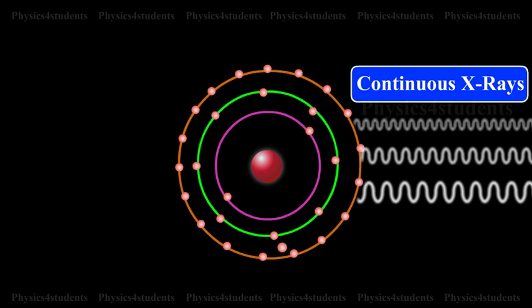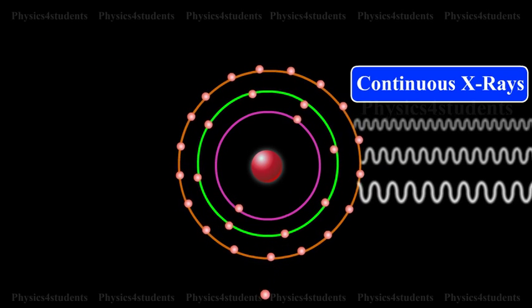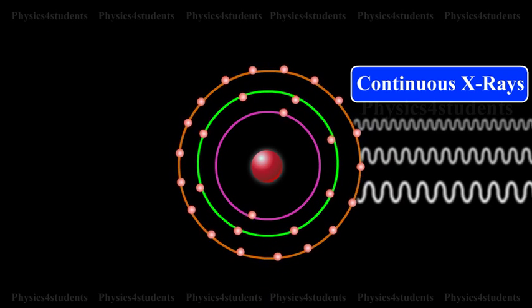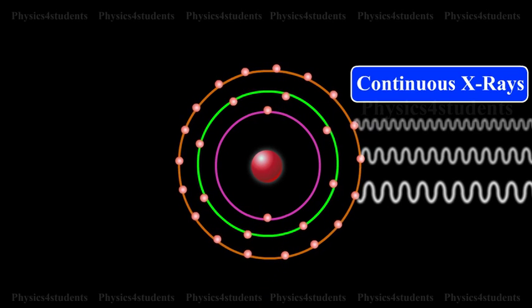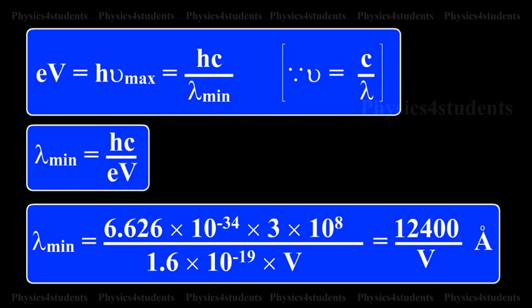The minimum wavelength depends on the anode voltage. If V is the potential difference between the anode and the cathode, eV is equal to h nu maximum, that is equal to hc by lambda minimum. Since nu is equal to c by lambda, the minimum wavelength of the given radiation is lambda minimum is equal to hc by eV.